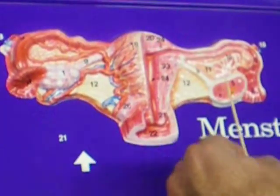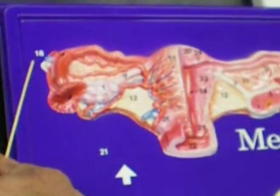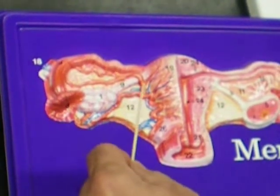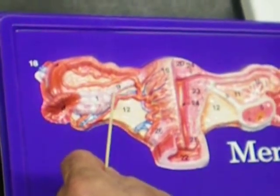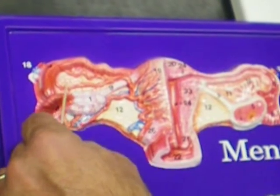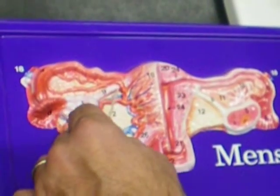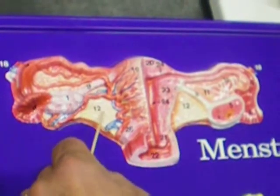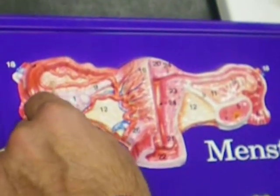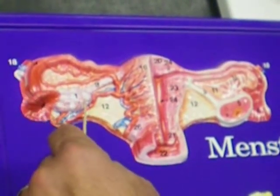The ovary is here and over here. The ovary is attached by the suspensory ligament out over here, and the ovarian ligament inside over here. Above the ovary is the yellow mesovarium ligament, and underneath the ovary and ovarian ligament is the broad ligament. So you have the broad ligament, the mesovarium, the ovarian ligament, the suspensory ligament, and the ovary.